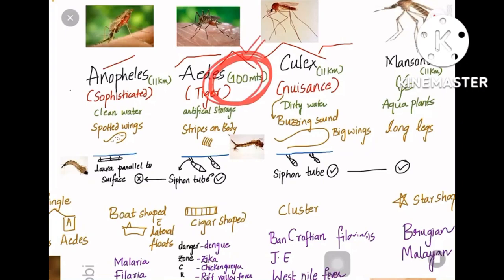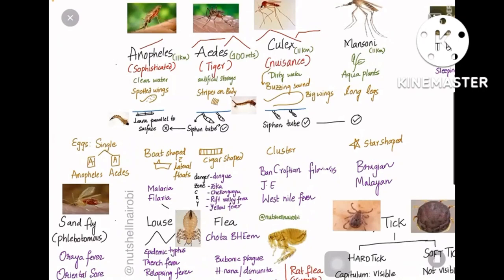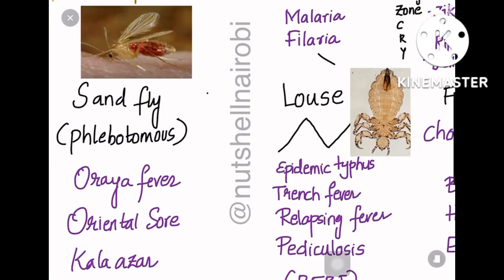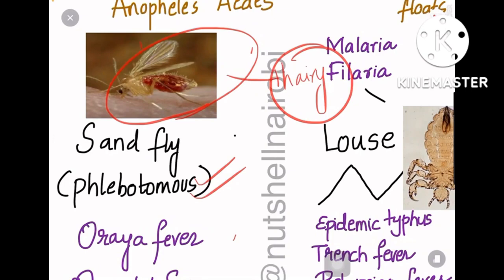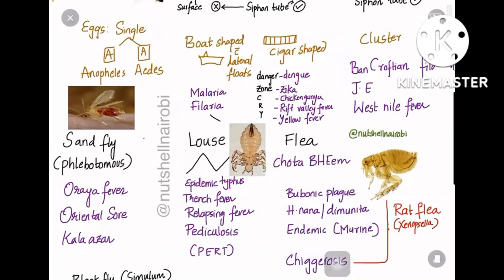Now let's talk about the sandfly. Sandfly is identified by its hairy wings — you can see the hairy wings in the zoomed image. It is called Phlebotomus and causes Oroya fever, Oriental sore, and Kala-azar.